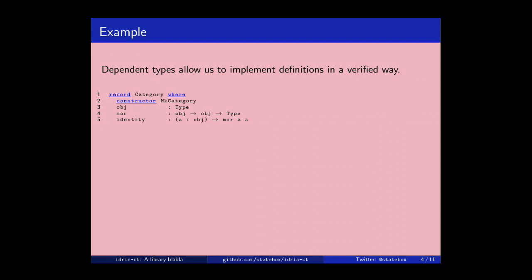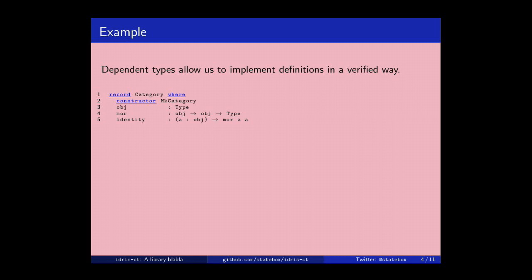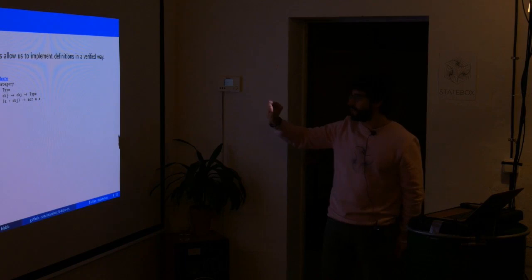Then you need identities, because the real point of category theory is that for each object, there is this morphism, which is the identity morphism, that captures the idea that is the morphism that does nothing. And the way you do it is you say, if you give me an object, A, I will give you a selected morphism from A to A, which is the identity on the object A.